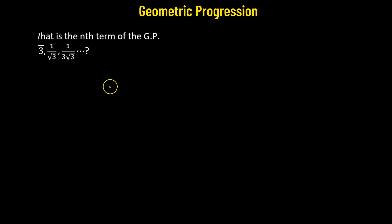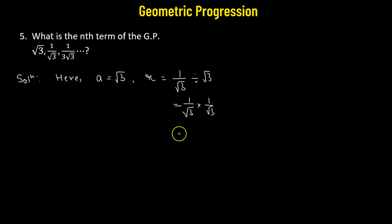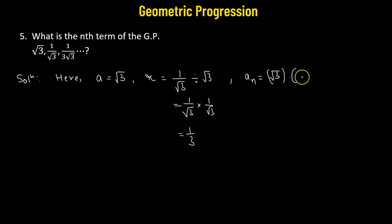Problem number five: we need to obtain the nth term of the geometric progression. The first term a is square root of 3. The common ratio r is the second term 1 over square root of 3 divided by square root of 3, which equals 1 over 3. So the general term a_n is square root of 3 multiplied by 1 over 3 raised to the power of n minus 1.